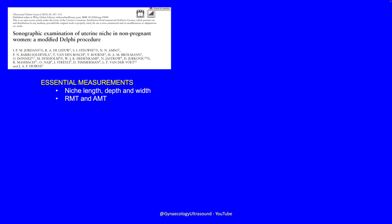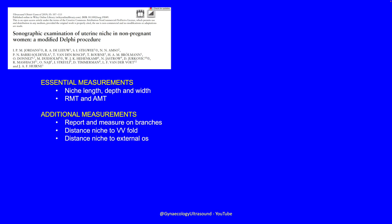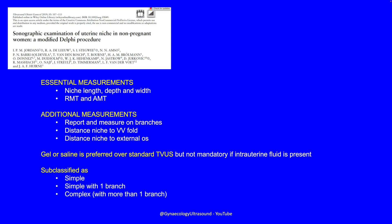There are a lot of papers now telling us how to measure the niche. The essential measurements are the length, depth, and width of the niche, with residual and adjacent myometrial thickness measurements. In some papers, gel or saline is preferred over standard transvaginal ultrasound because you may not see the niche if it doesn't have fluid in it, though it's not mandatory if there is some intrauterine fluid. The niche can be subclassified as simple, simple with a branch, or complex with more than one branch.